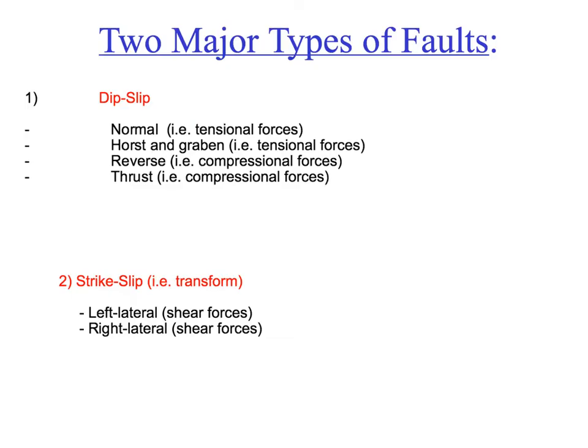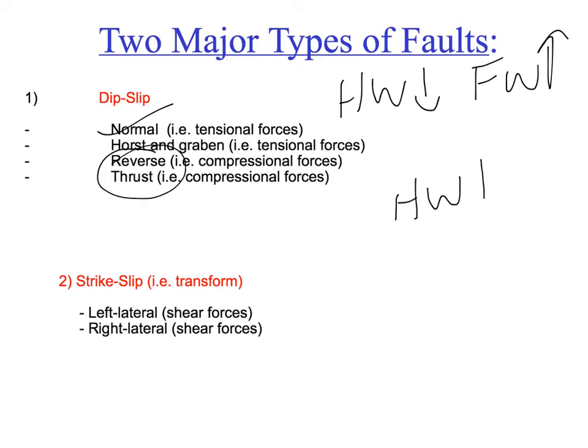There are two categories of faults: dip-slip and strike-slip. In dip-slip faults, one piece either slips down the dip or slips up the dip. Normal faults are formed from tensional forces, so you get them at divergent plate boundaries. Reverse and thrust faults form from compressional forces, so both are found at convergent plate boundaries. For a normal fault, the hanging wall goes down and the foot wall goes up. For reverse and thrust faults, it's the opposite — the hanging wall goes up and the foot wall goes down. A thrust fault is essentially a reverse fault at a low angle, typically less than 10 degrees.